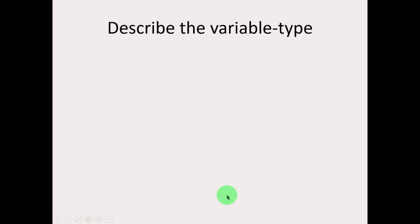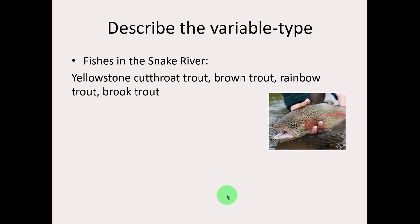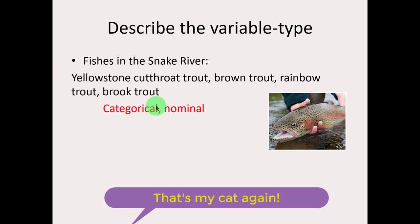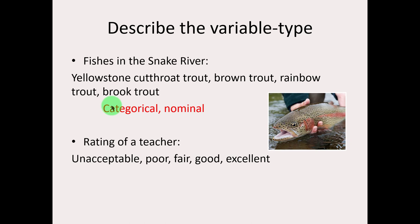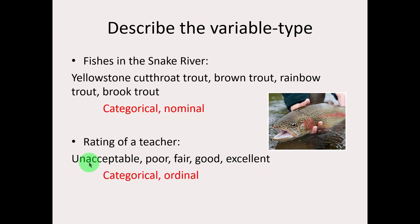I'd like to look at some more examples of variable types. I'm going to display the variable and then right below it the values or categories that compose that variable. Fishes in the Snake River — we've got different kinds of trout, which appears to be categorical, and there's no inherent order to these trout, so this would be a nominal categorical variable. Teacher rating — unacceptable, poor, fair, good, excellent. Here we have another variable composed of categories, and in this case the categories have a natural order to them, so that would be an ordinal categorical variable.